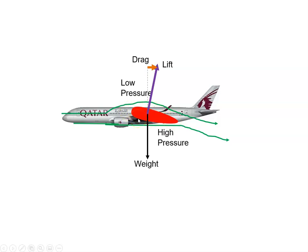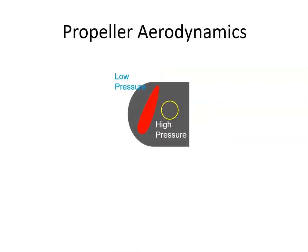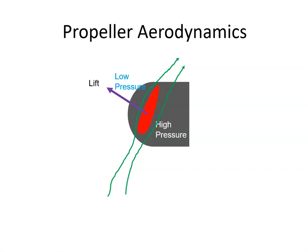If we extend that then to a propeller, with a propeller we still have the airfoil shape. The air will flow over the propeller, and we still get a high pressure on this side of the propeller and a low pressure on that side. And just as we had lift with the wing, we get lift with the propeller.